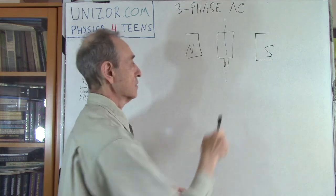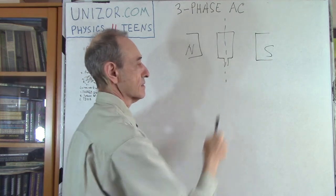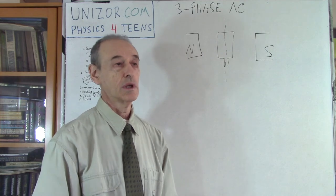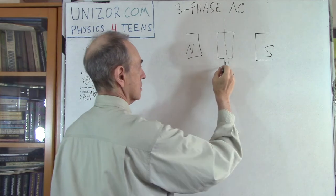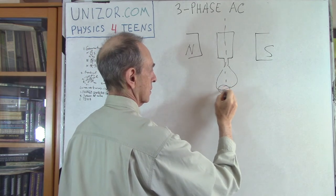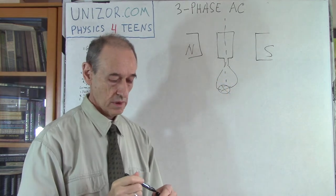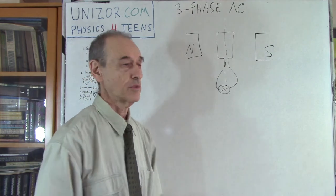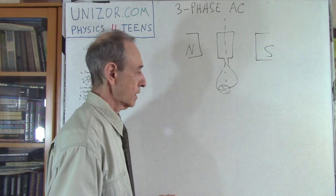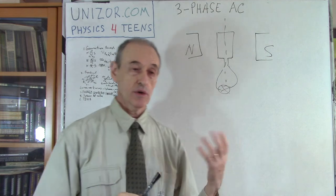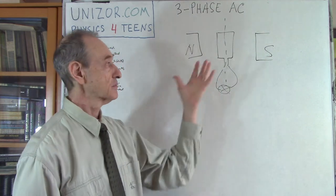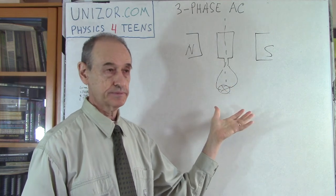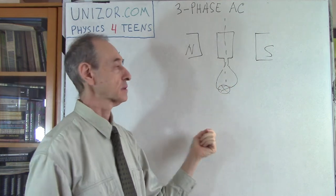That's an alternating current generator — a very basic thing. We can connect this to an outside consumer of electricity, like a lamp, and it will be lit if the proper voltage is generated. So we have converted mechanical energy — rotation — into AC, into alternating electric current.